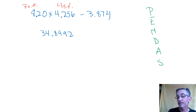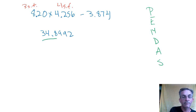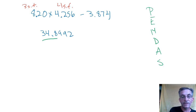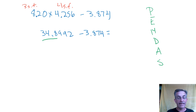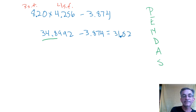I would keep this right here — up to three sig figs. Now I keep going with the math, because I still have to do the subtraction. I'm going to use the whole number still on my calculator — the whole 34.8992 — and subtract 3.874. My calculator says 31.0252.